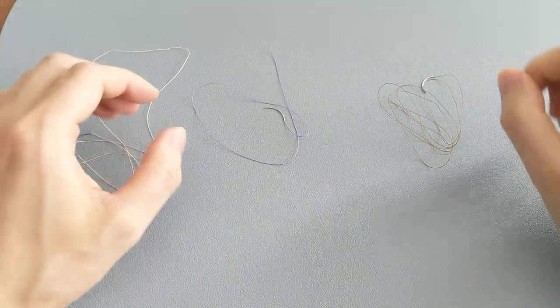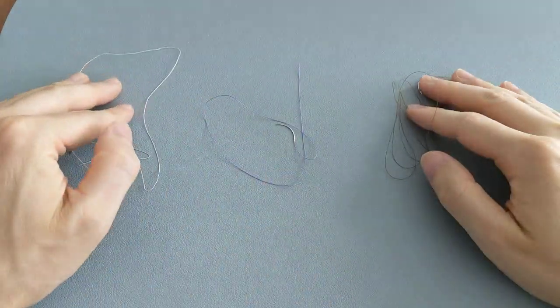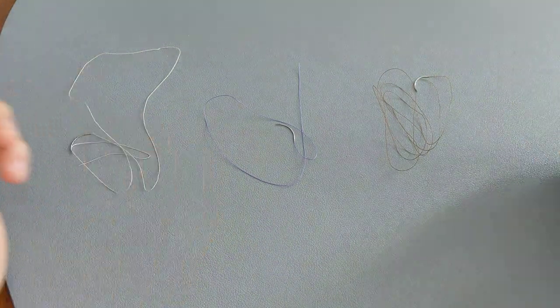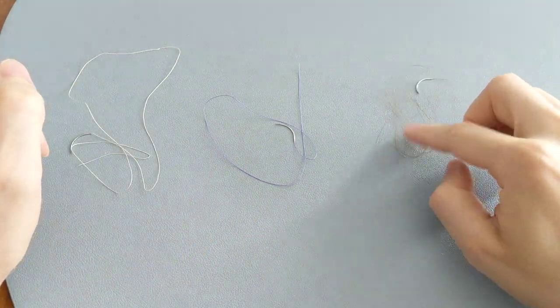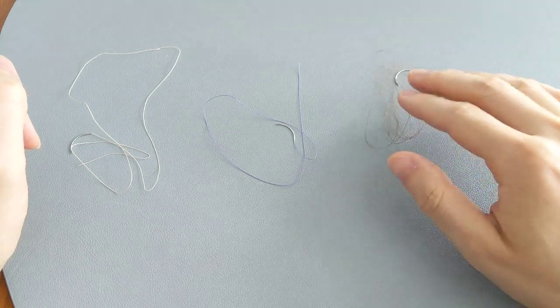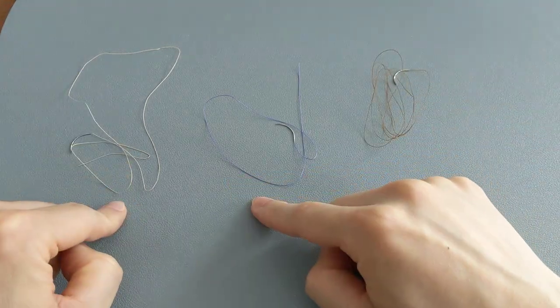This video is just to show you what our dissolvable stitches look like. Here we have the one on the right, which is an all-natural one made out of chromic gut, and then these two on the left are synthetic.